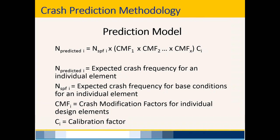Over the next few slides, we'll discuss the various components of the prediction model: the N SPF, the CMFs, and the calibration factor. First, let's talk about the N SPF — this represents the number of predicted crashes from the applicable safety performance function.